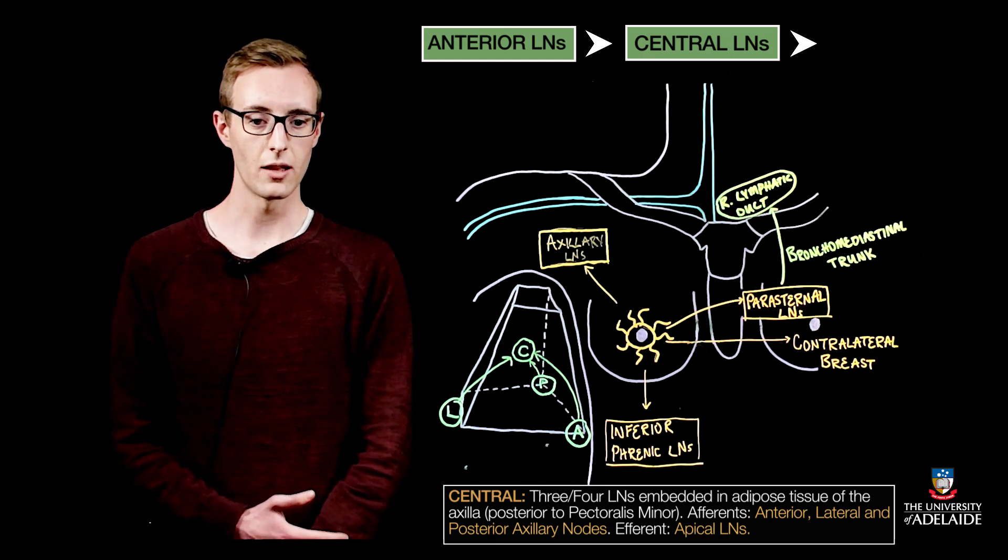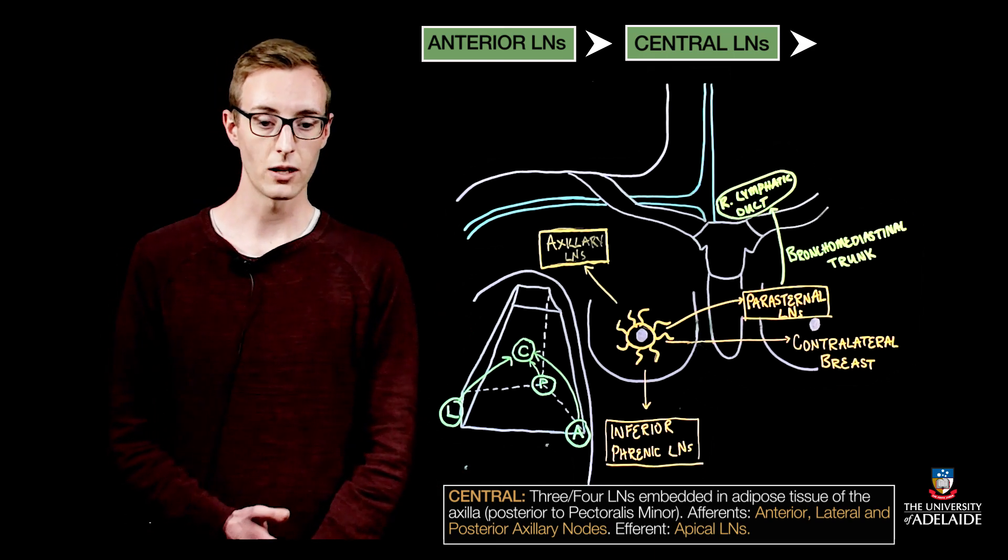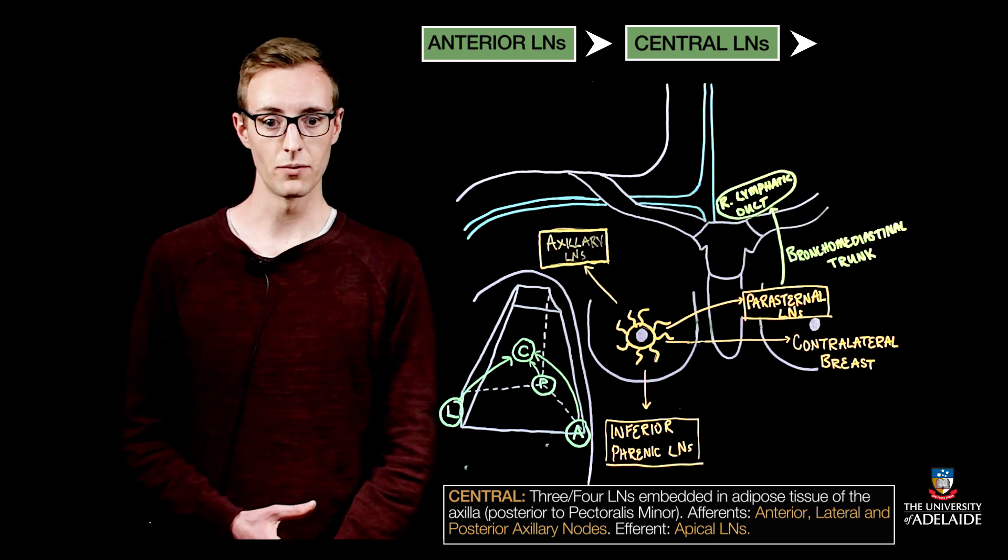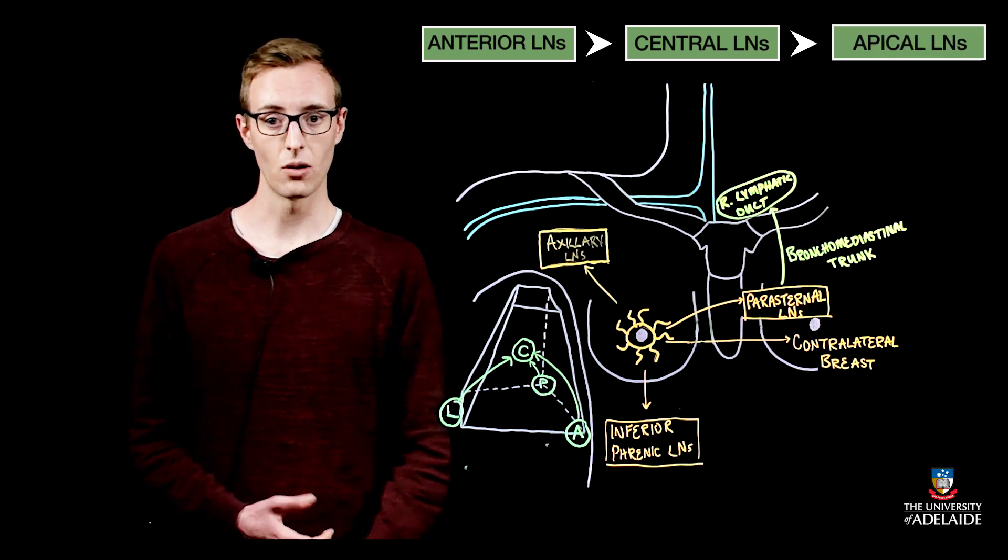The central lymph nodes are related to the axillary vein. From here the lymph again drains superiorly to the apical lymph nodes which sit deep in the axilla again on the axillary vein.